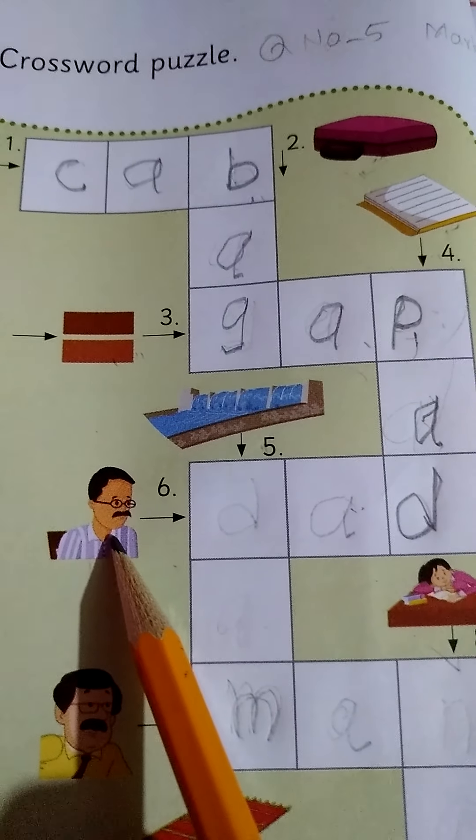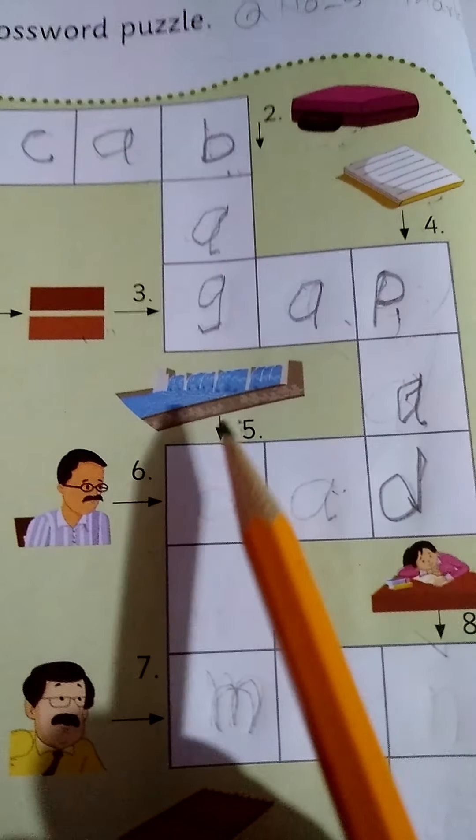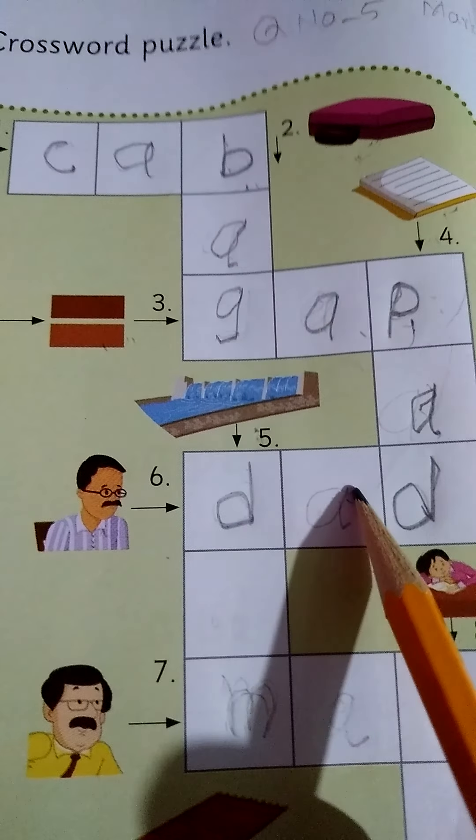This is dad. This is dam. D. So we write here D A D dad.